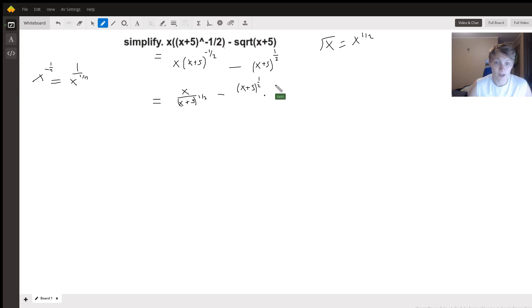So this is going to be multiplied by x plus 5 to the one-half and divided by x plus 5 to the one-half. All right, that's 1. So we haven't really changed this at all.